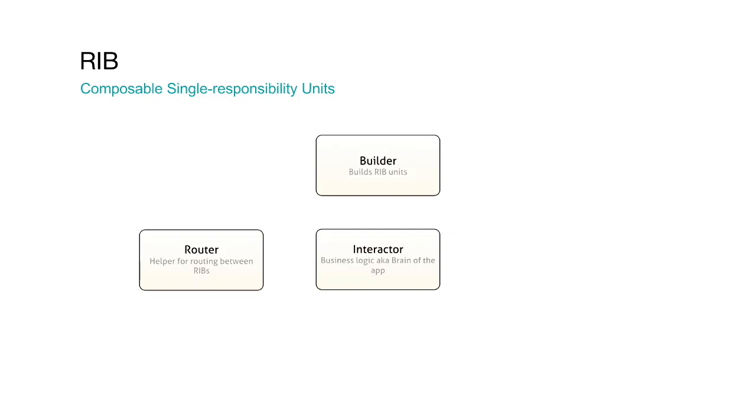And then we have the builder. The builder is roughly a factory pattern that allows us to compose different parts of the rib together to form new ribs. Like imagine if we have two ribs, we can actually use a separate builder to use the first rib's router and the second rib's interactor and put them together to create a third rib. It allows us to do unit testing. It allows us to compose different components of the rib together.